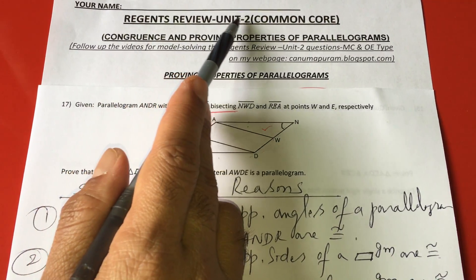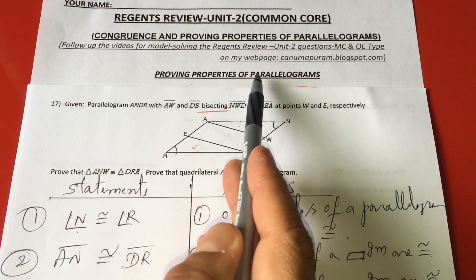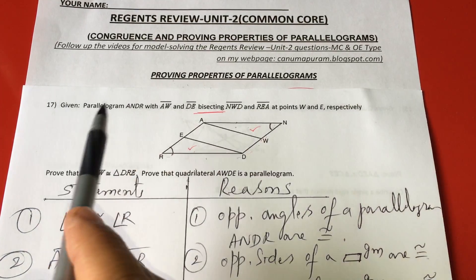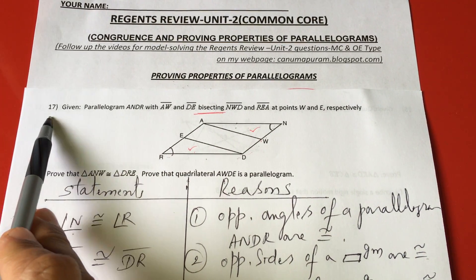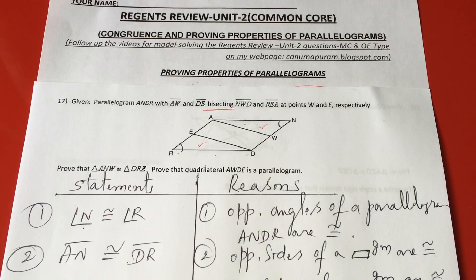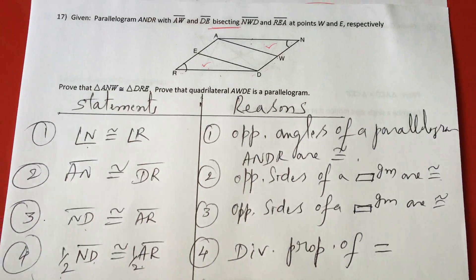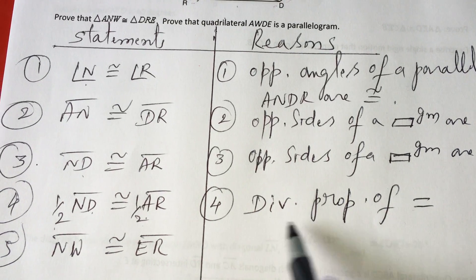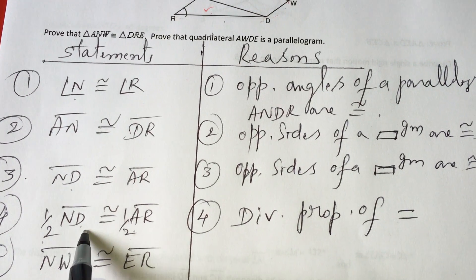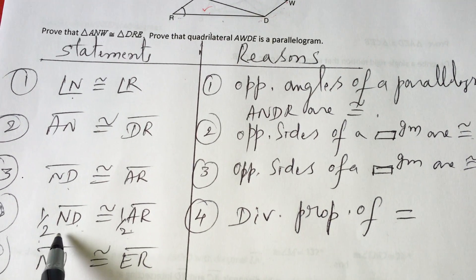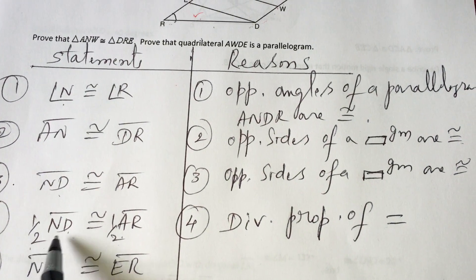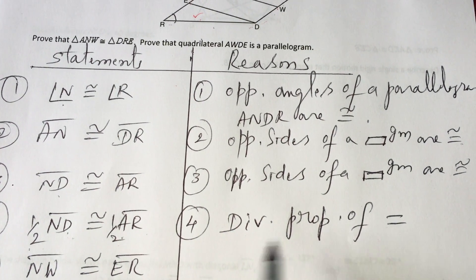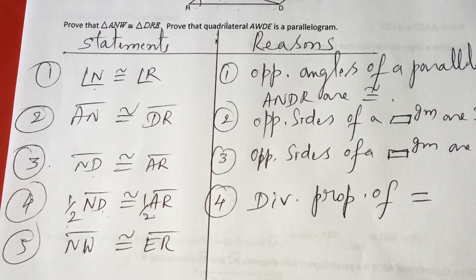Under this Regents Review Unit 2, proving properties of parallelograms, I have already started proving the 17th problem in part A. I have shown up to the fourth step, that is the fourth statement and its reason. Now, half ND is half AR, which is division property of equality. We are continuing in part B.